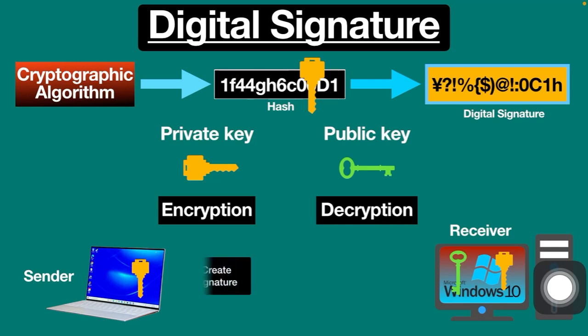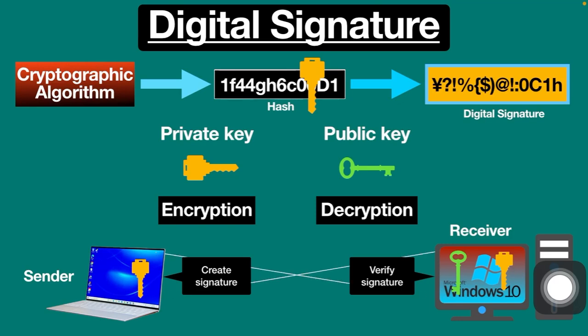The sender and receiver both have private and public keys. The private key is kept secret and is not shared with the receiver, while the public key is shared. Simply put, the private key is used for creating a digital signature while the public key is used for verifying it. A pair of public and private keys are linked together, making it impossible for a public key to verify a signature generated by a private key that is not associated with it.